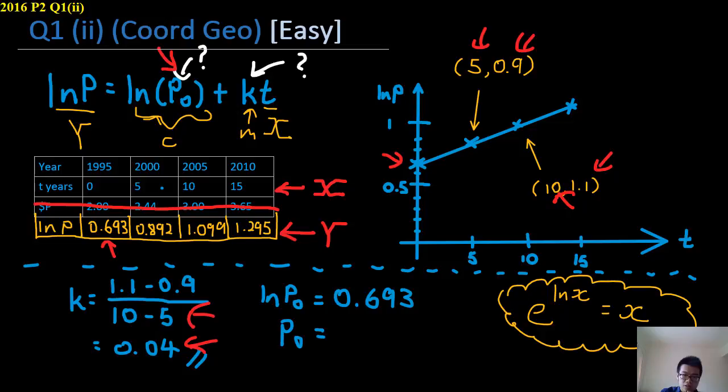To get P0 from ln P0, all you have to do is use this formula. So e to the power of everything over here, e to the power of 0.693.